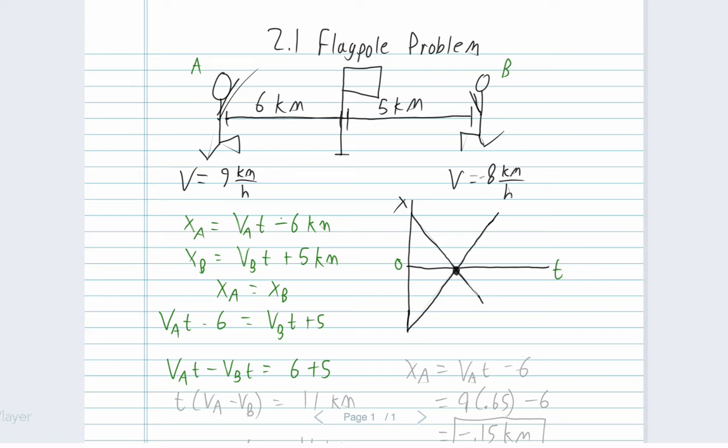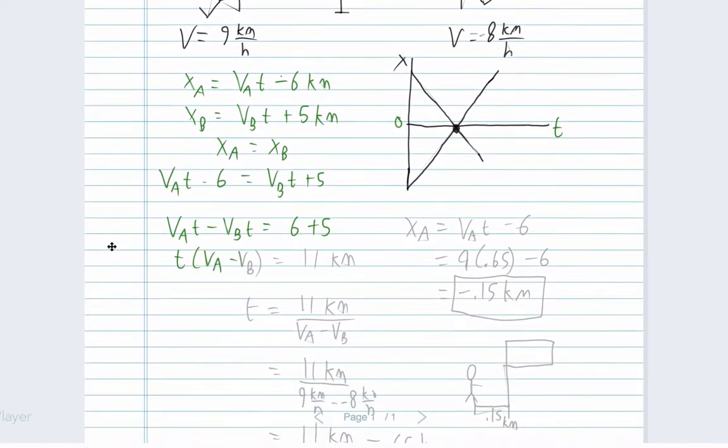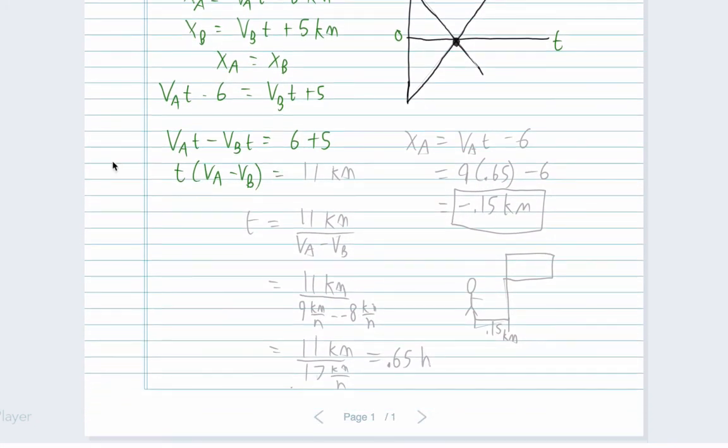Then we'll factor out the t. We get 11 on this side, 11 kilometers. And then we'll divide by that and we'll end up with t by itself. So t equals 11 kilometers divided by the difference in their velocities. When we plug it in, just be careful.